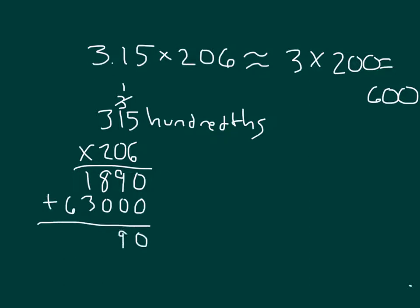Carefully adding those together, I get 64,890, but that would be hundredths. So that equals 648.90, and so that estimate of 600 also allows me and helps me to place that decimal point there. 648.90 is my product for 3.15 times 206.